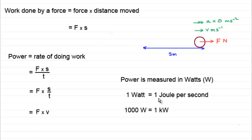Using these units, the unit for power is the watt, or W for short. One watt is defined as one joule per second — remember, work done is measured in joules. And since we're dealing with quite large quantities, 1000 watts is called one kilowatt.